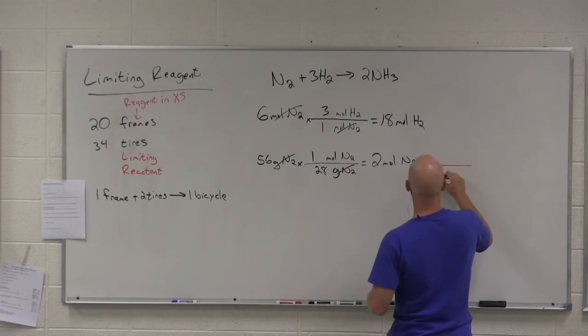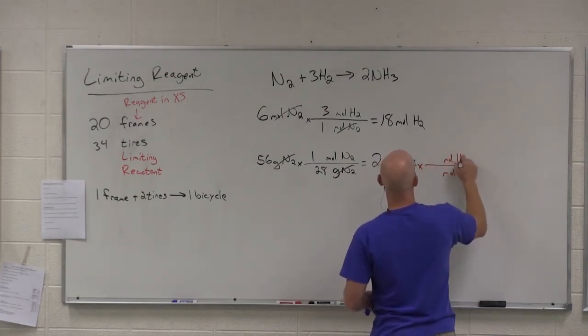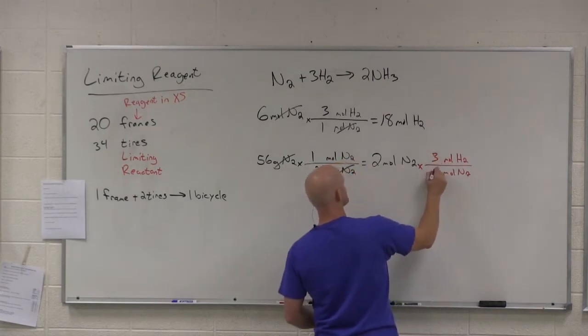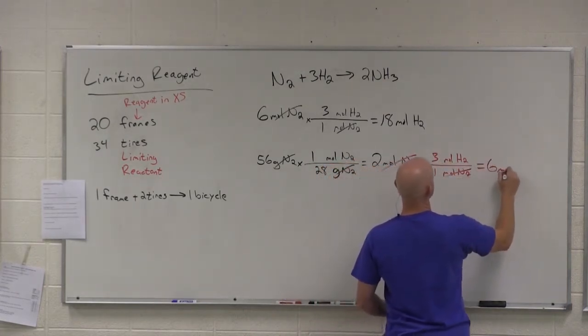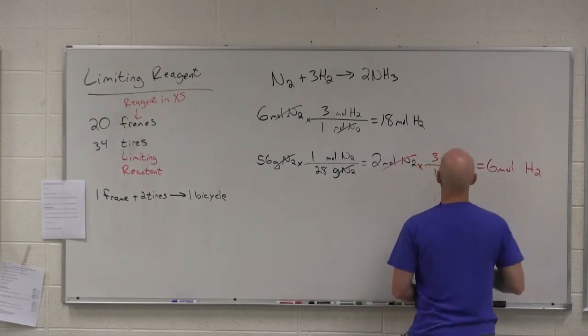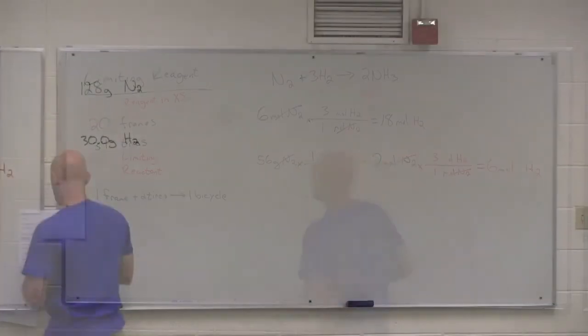And again, we would formally write that out by putting moles of N2 in the denominator, moles of H2 in the numerator, and just using the coefficients in that mole-to-mole ratio. And 2 times 3 is 6 moles of H2.